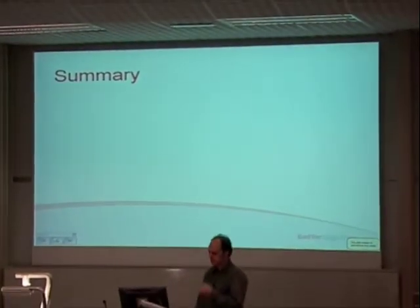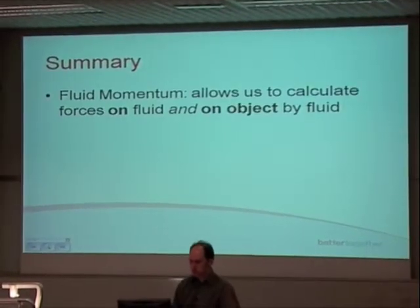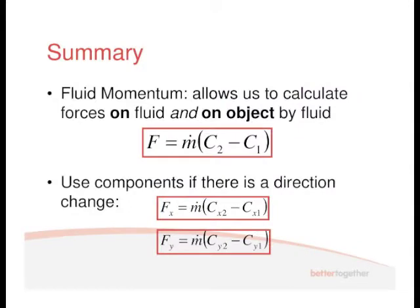In summary, fluid momentum allows us to calculate the forces on the fluid and on an object by a fluid. The equation is M dot times the change in velocity, derived from Newton's second law. Often these problems require decomposing into X and Y components to deal with changes in direction: the force in the X direction is M dot times (CX2 minus CX1), and the force in the Y direction uses CY2 and CY1.